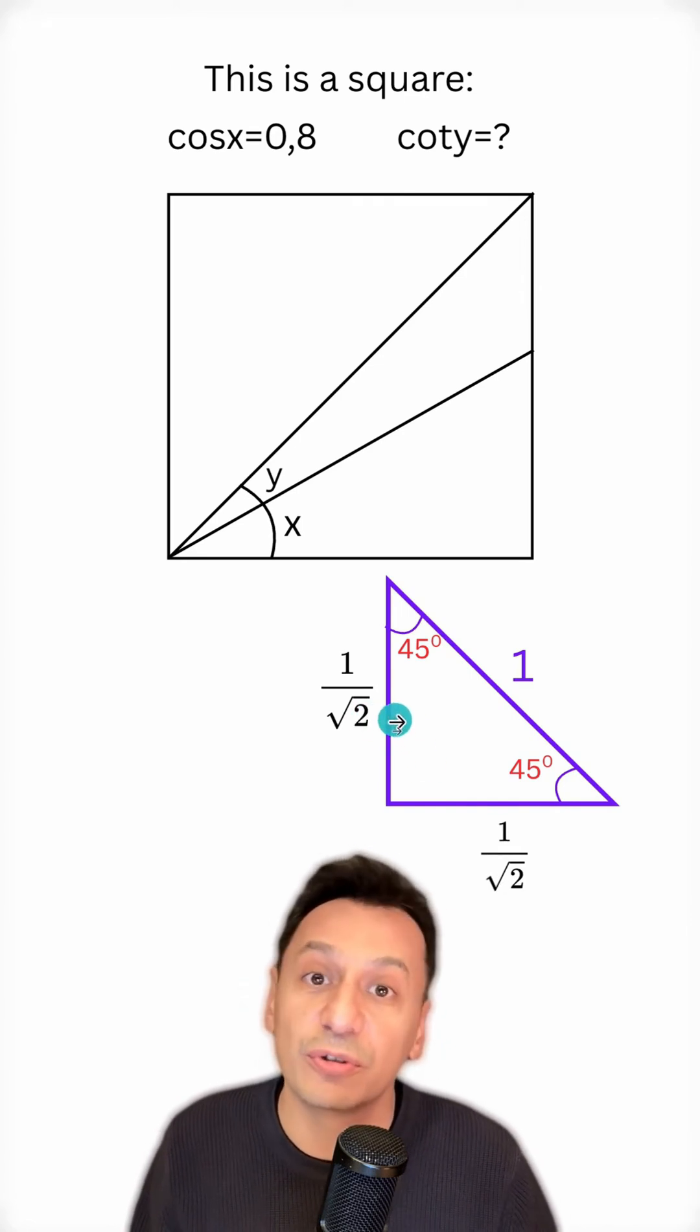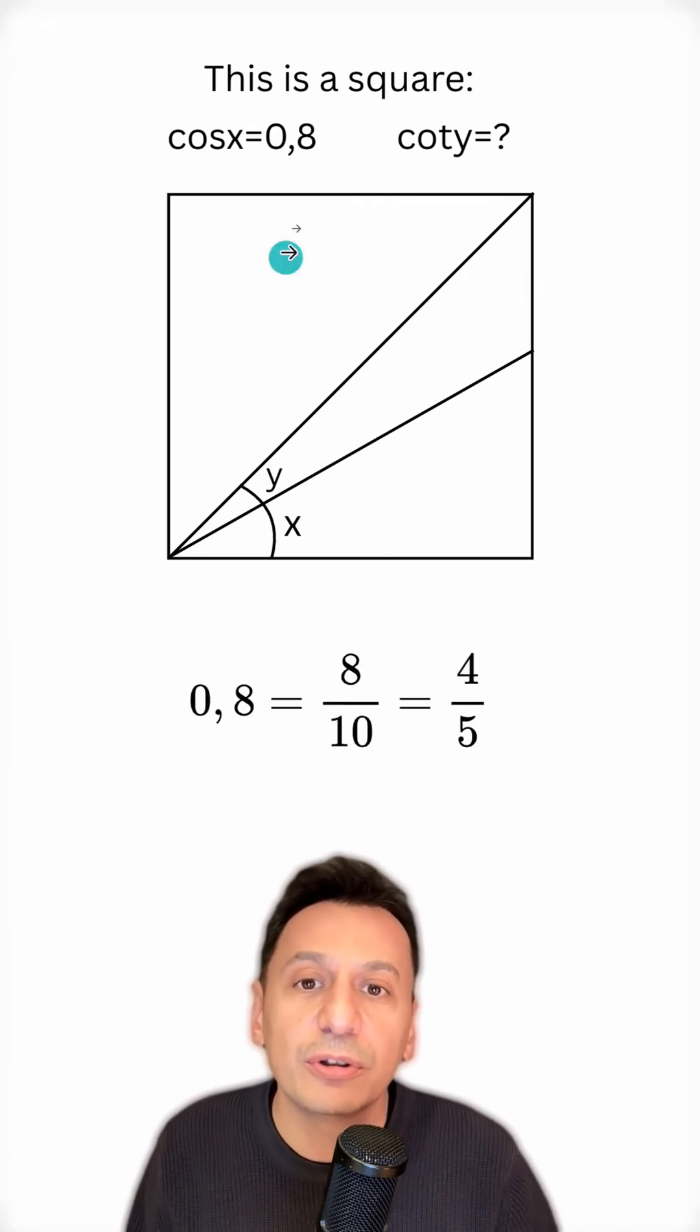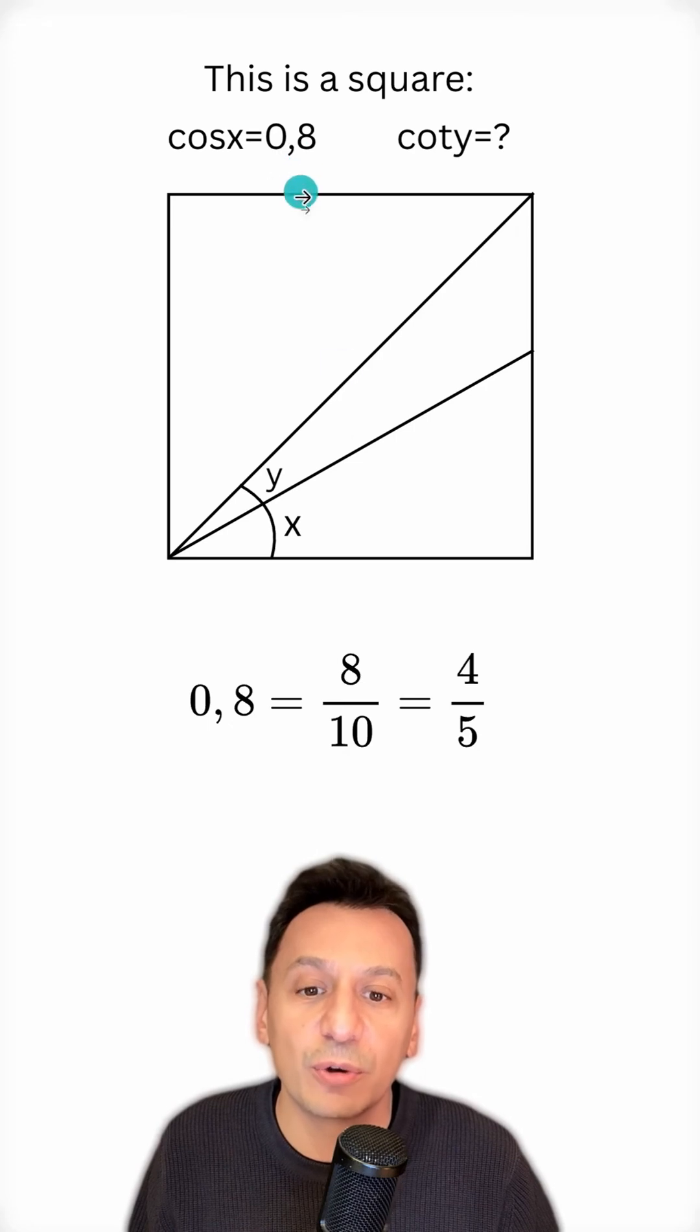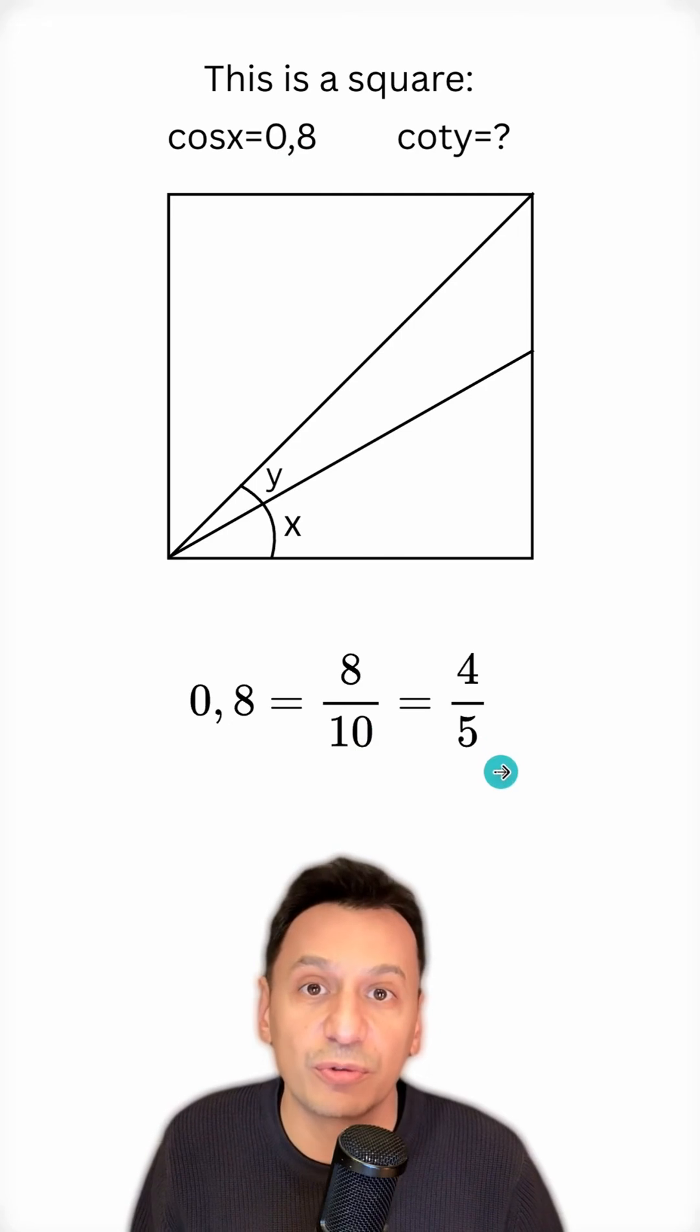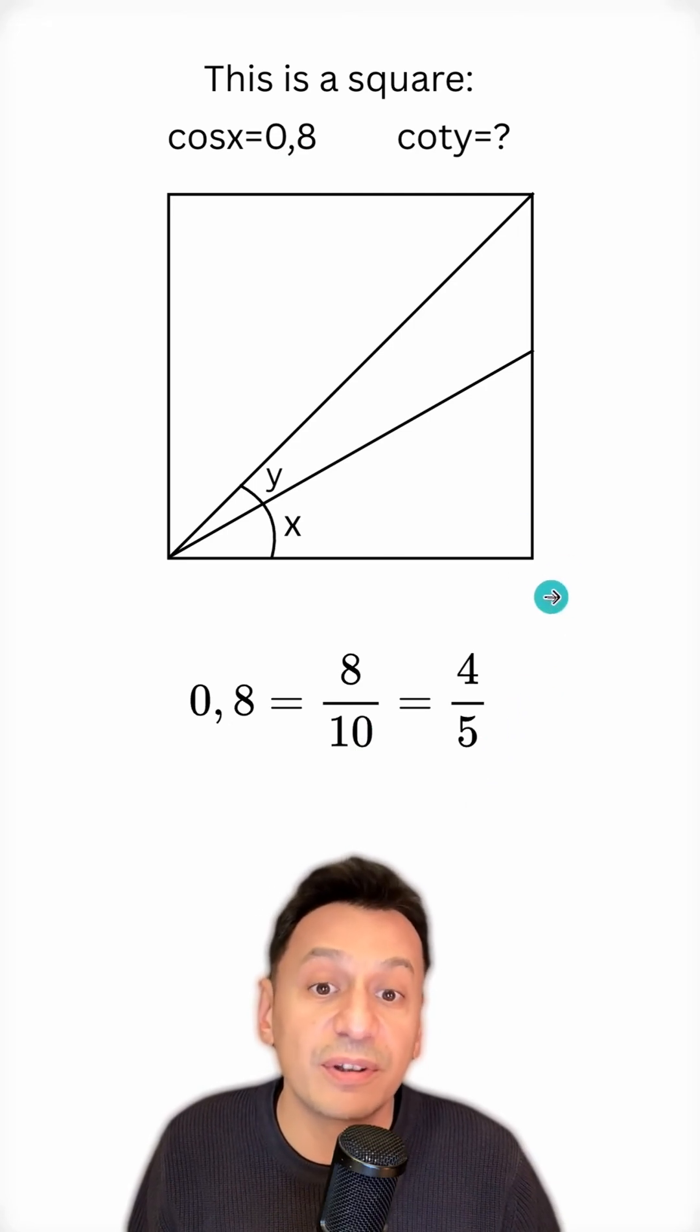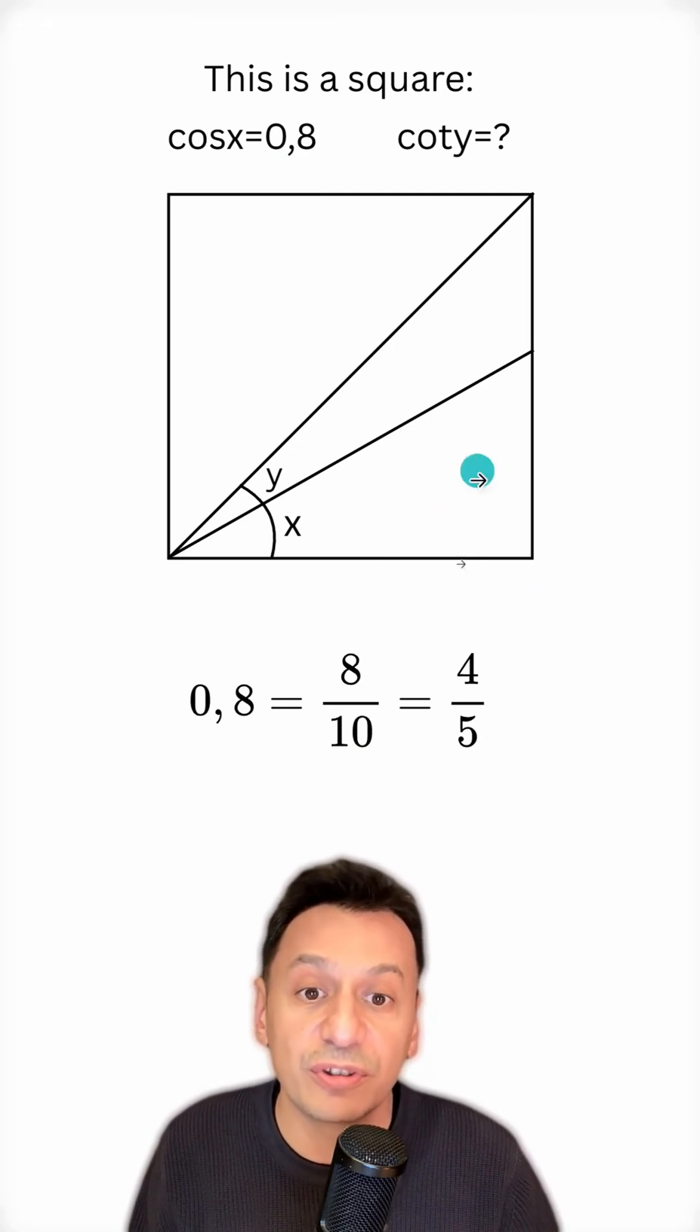Now let's solve our question using this information. First, let's start with the value 8 over 10 here. I simplify 8 over 10 and write it as 4 over 5. Since no length is given in the question, I want to write the cosine value here.